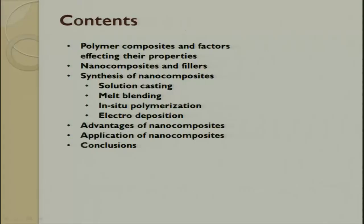Why is that required? Because there are certain requirements where we would like to add more interface in the material. When we add more interface, fracture toughness increases in ceramic matrix composites. For polymer matrix composites, it enhances toughness and wear resistance. People have added conducting nano materials, leading to conducting polymers. This lecture will cover polymer composites and factors affecting their properties, nano composites and their fillers, synthesis routes, advantages, applications, and conclusions.